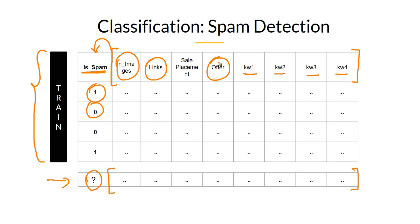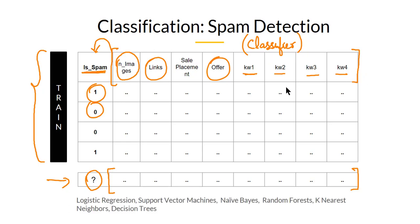The machine learning model in this case is referred to as a classifier. In the previous case we called it a regressor; here it is called a classifier. There are various different types of machine learning algorithms that can do this job. Some examples are shown here — you can use Naive Bayes for classification, and you will also see logistic regression. Some algorithms that can be used for regression problems can also be used for classification purposes as well.